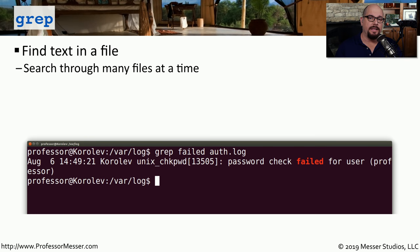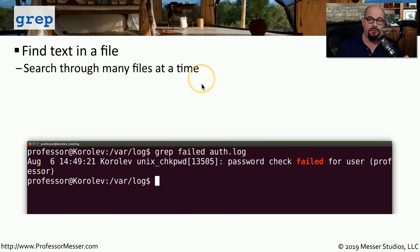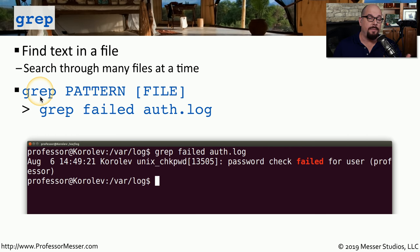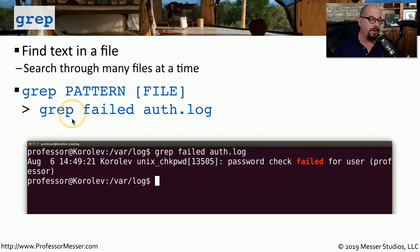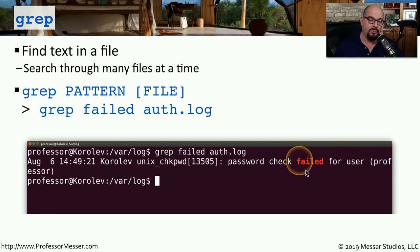There were a lot of files in that log directory, and there may be information we'd like to find in one of those log files. One way to search through a text file is to use the grep command, which searches through one or many files to find a piece of text. To use grep, you specify the pattern you're looking for and the name of the file — for example, 'grep failed auth.log' identifies all lines matching the word 'failed'.